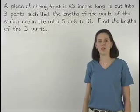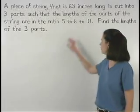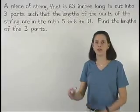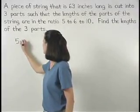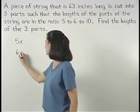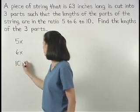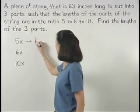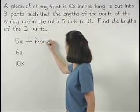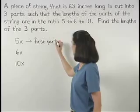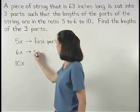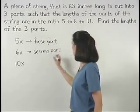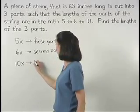Since the three parts of the string are in the ratio 5 to 6 to 10, we can represent the parts as 5x, 6x, and 10x. So let's call 5x our first part of the string, 6x our second part, and 10x our third part.